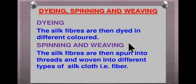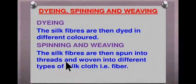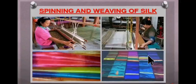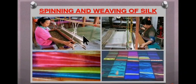Here are pictures showing the processing of silk. In this picture, a person is putting cocoons in boiling water to kill the silk moth. Next is dyeing, spinning and weaving. The silk fibers are dyed in different colors to get the desired color in the yarn or fiber. Then, in spinning and weaving, the silk fibers are spun into threads and woven into different types of silk cloth. This process uses a machine called a loom in which weaving is done.